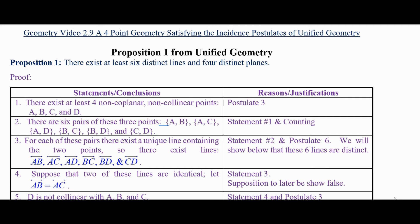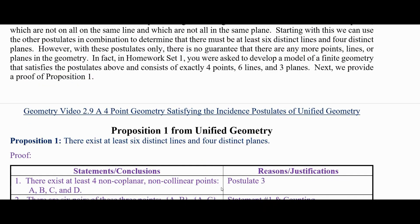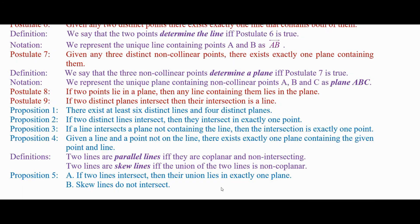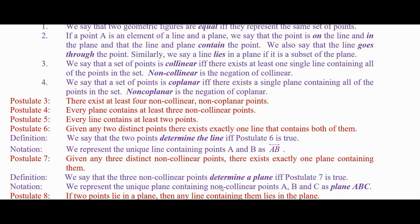We can't prove that there's any more than this with what we have so far, because we're going to show that there's a model with exactly four points, six lines, and four planes that satisfies all the postulates and definitions that we have.